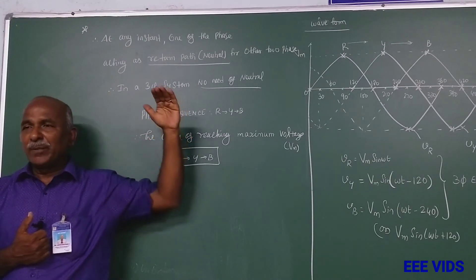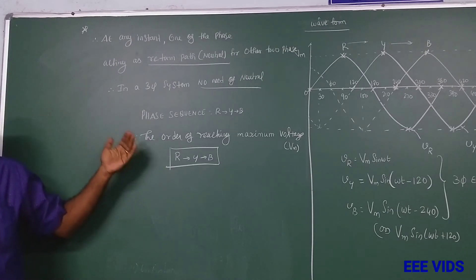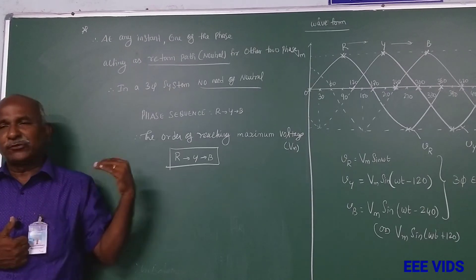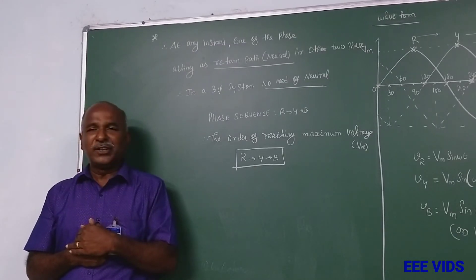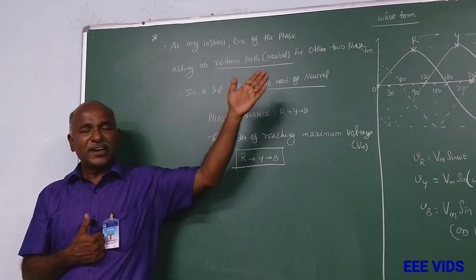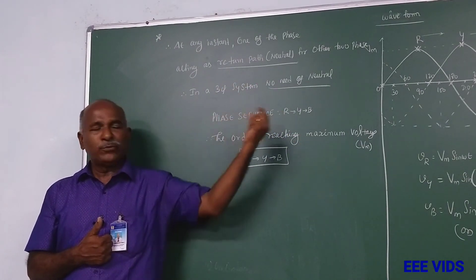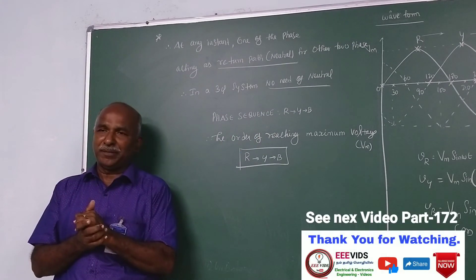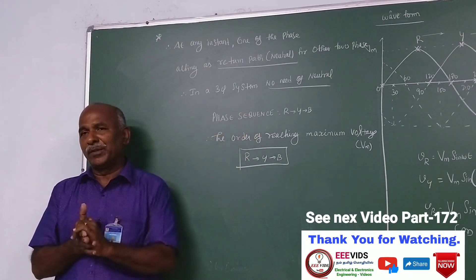Based on supply, three phase systems are classified as balanced and unbalanced. In a balanced system, neutral is used. At any instant, one of the phases is acting as the return path, and the three phases will add up to equal zero. This is a main property — balanced supply is not available without this property.